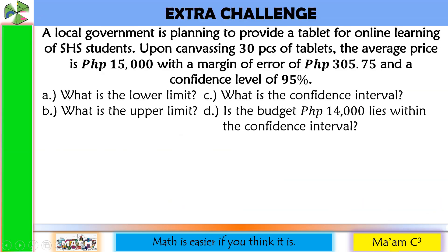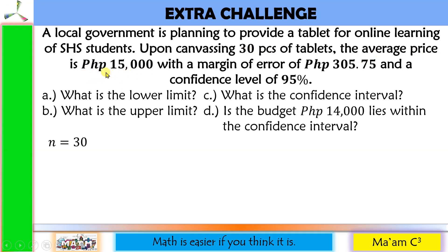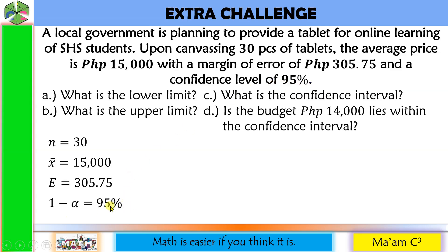Let us do an extra challenge. A local government is planning to provide a tablet for online learning of senior high school students. Upon canvassing 30 pieces of tablets, the average price is 15,000 pesos with a margin of error of 305.75 pesos and a confidence level of 95%. Our given: sample size n equals 30, sample mean x-bar equals 15,000, margin of error E equals 305.75, and confidence level 1 minus alpha equals 95%.